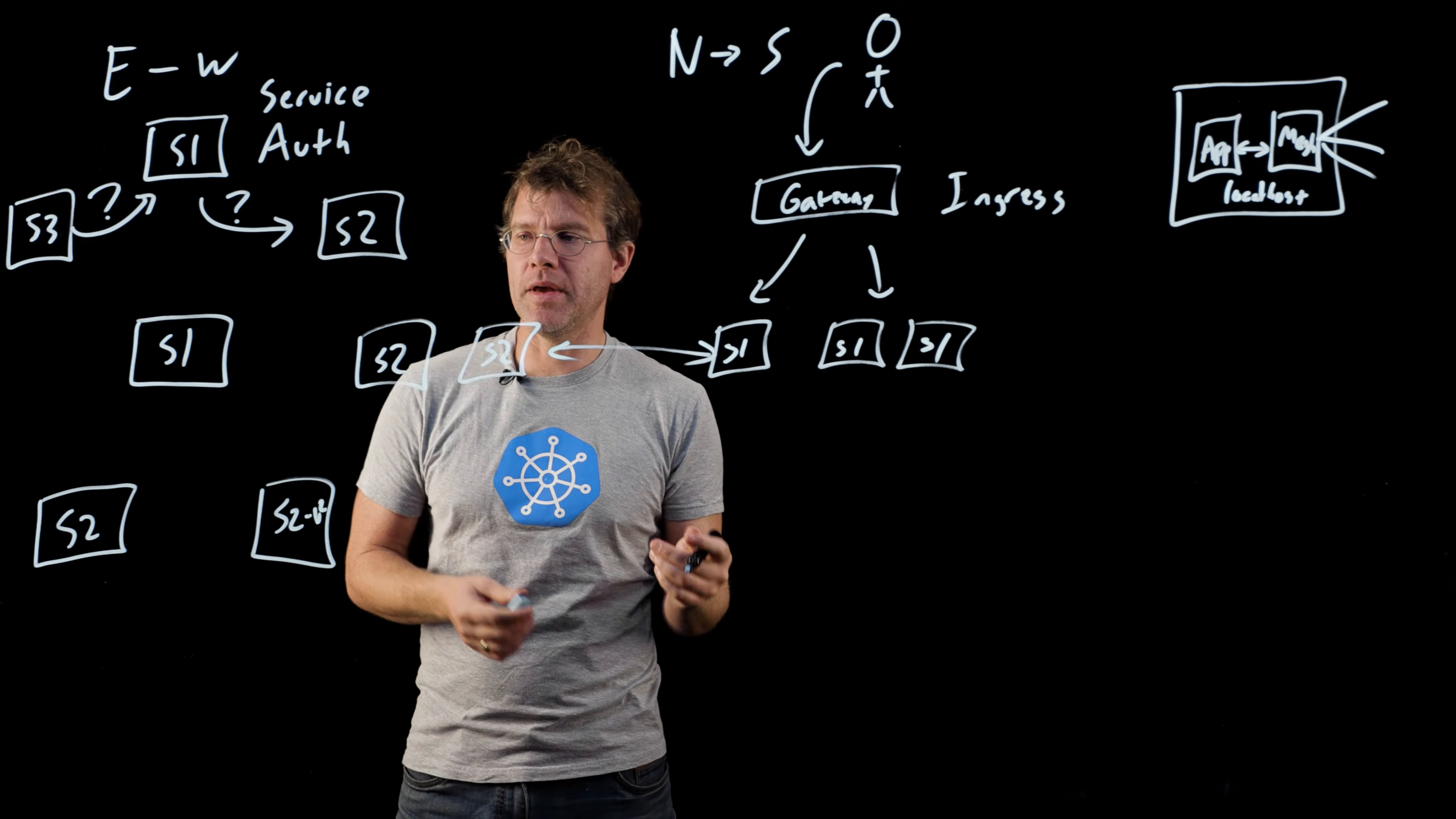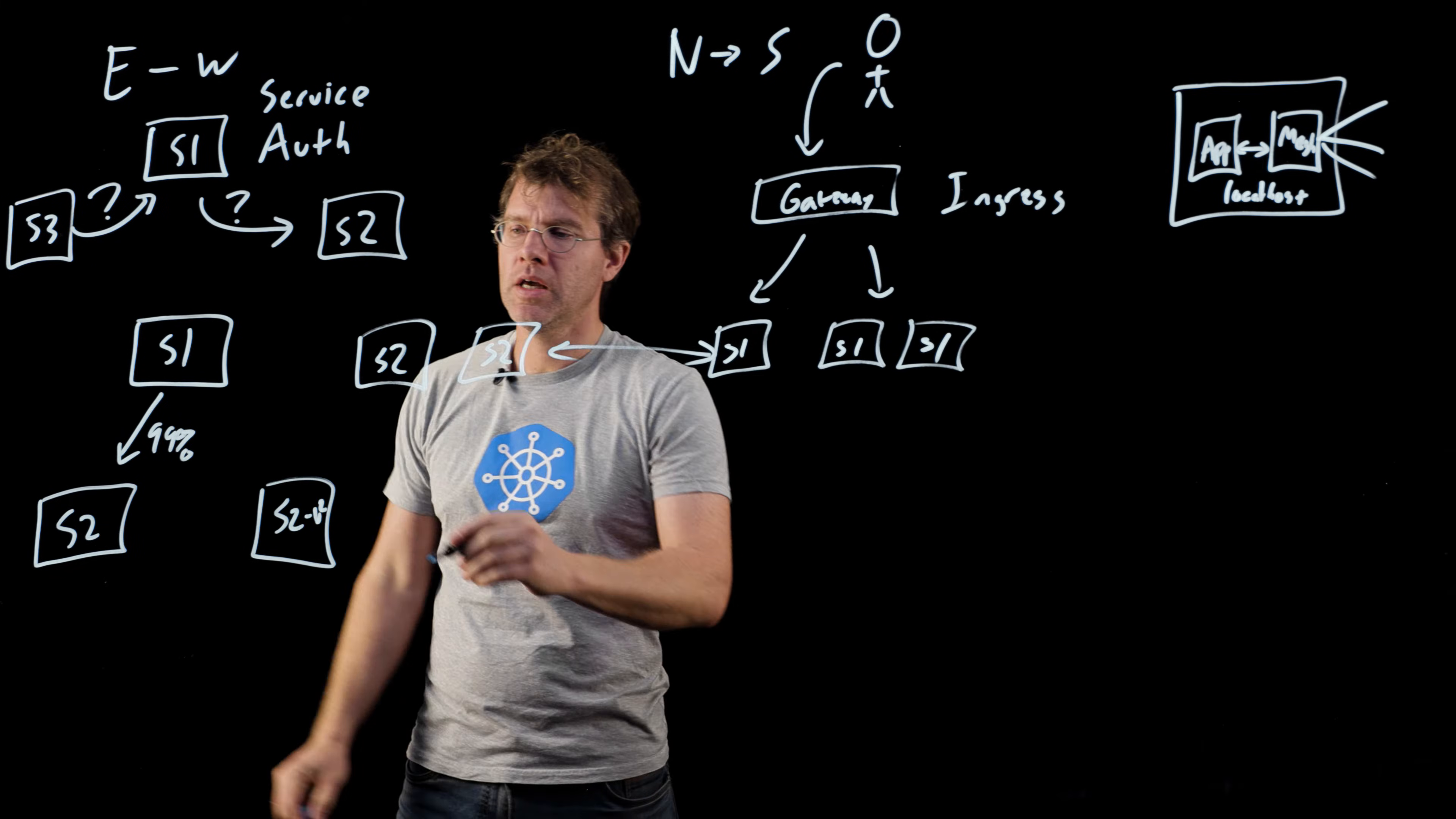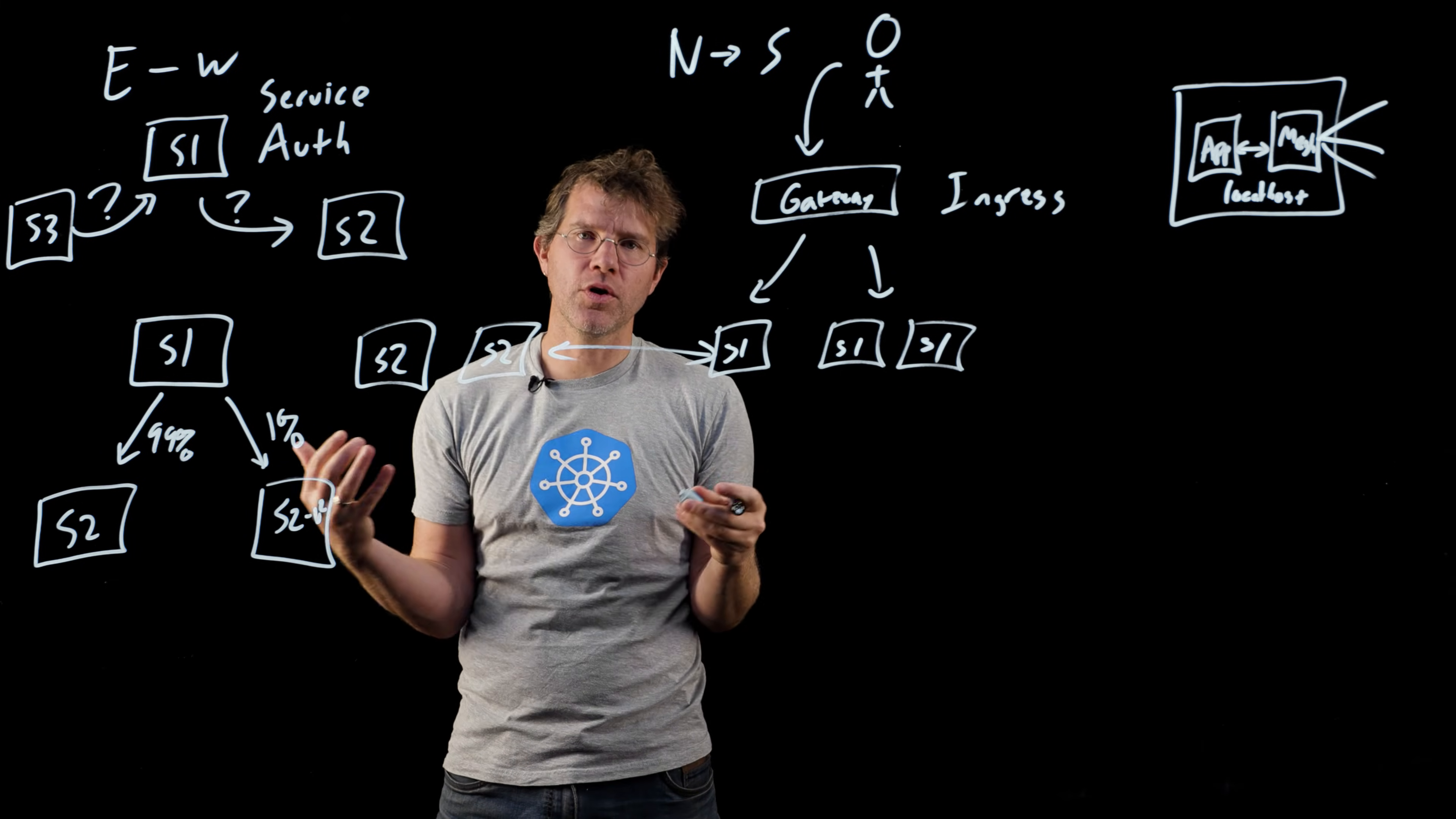I might want to do an experiment and say, okay, I want 99% of my traffic to go to the production, I-know-it-works version of service two, but I want to do a 1% experiment to send traffic to this other version to test for a while.